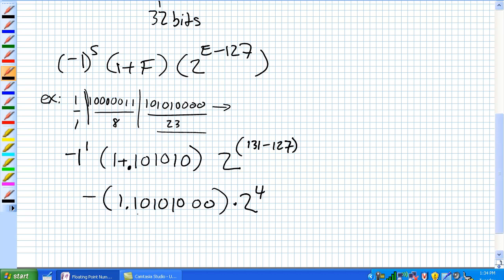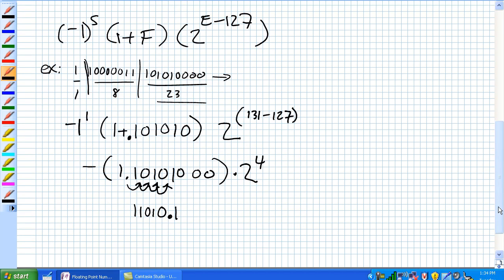It looks like we have to move our decimal place 1, 2, 3, 4. So there it is. It's 11010.01. Now that is easy to turn back into a decimal number. Remember, that's 2 to the negative 1. There's no 2 to the zeros. There's 2 to the 1, no 2 to the 2s.